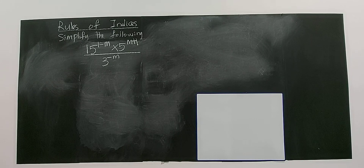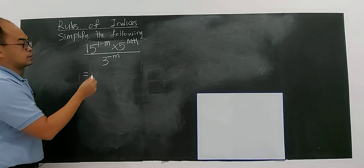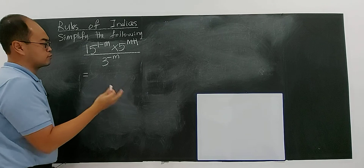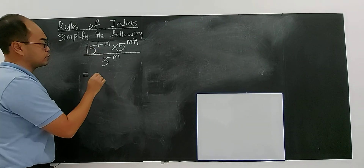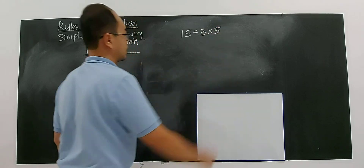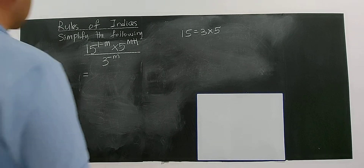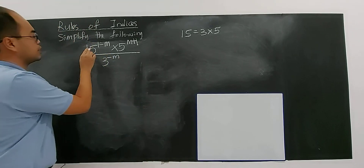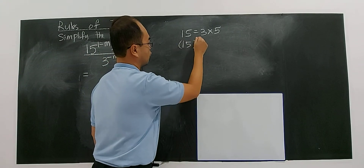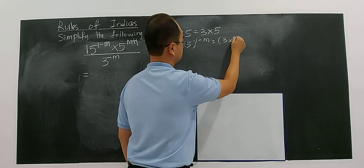Let's simplify this expression with indices. These have different bases: 5, 3, and 15. But 15 you can break up into 3 times 5. So the product of 3 multiplied by 5 gives you 15. So 15 to the power of 1 minus m is the same as 3 times 5 to the power of 1 minus m.